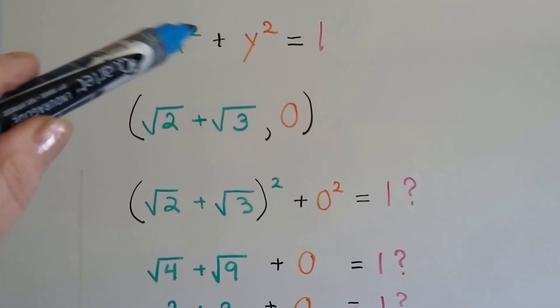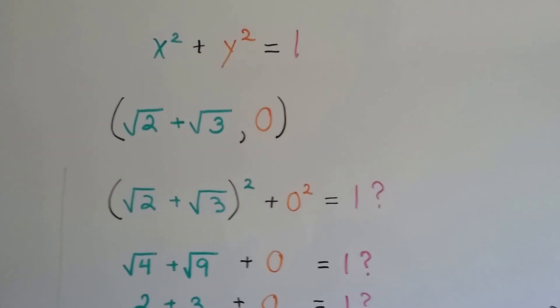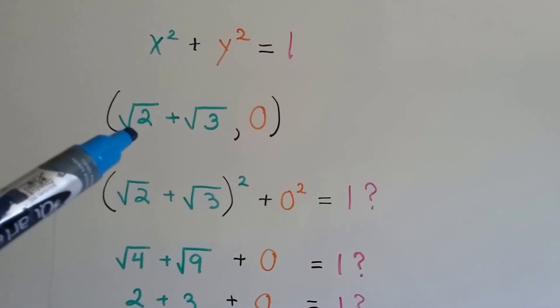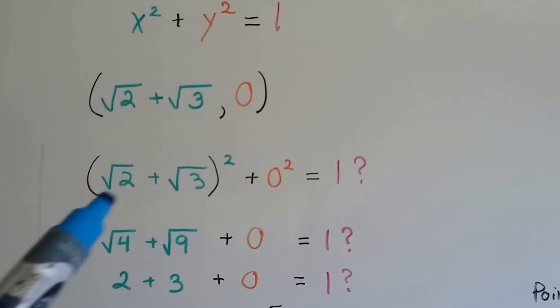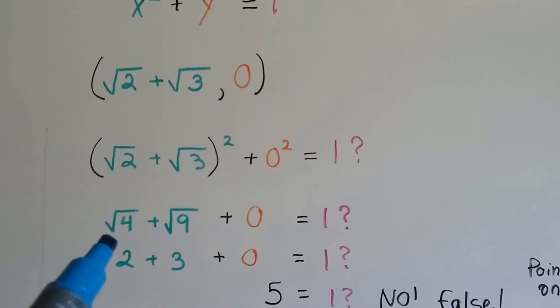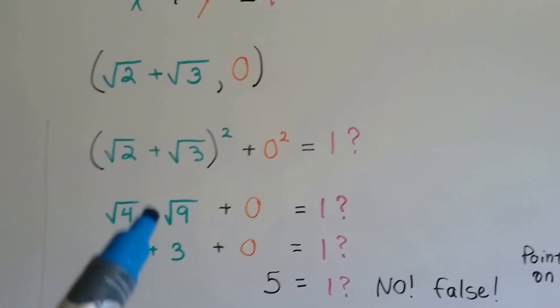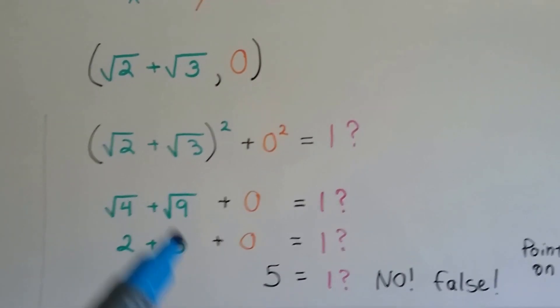So remember, we're using x squared plus y squared equals 1. What about this? Our x value is the square root of 2 plus the square root of 3, and our y value is a 0. Well, if we square this, we're just going to get the square root of 4 plus the square root of 9, which is 2 plus 3.